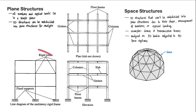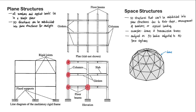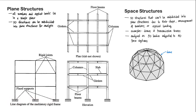So this is the line diagram of our multi-story rigid frame. This structure is a structural steel structure, so the joints would typically be connected by welding or by bolts. These joints are typically rigid joints, as you can see in our figure. And then for our supports, these are usually fixed supports.